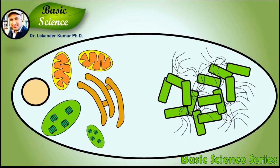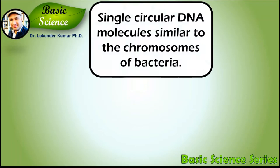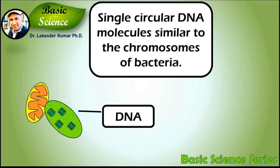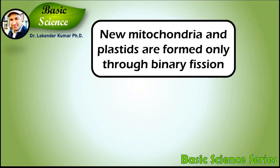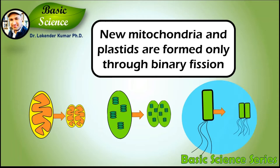There are some evidences in favor of this hypothesis. For example, some mitochondria and plastids contain a single circular DNA molecule similar to the chromosome of bacteria. New mitochondria and plastids are formed only through binary fission, the form of cell division used by bacteria and archaea.